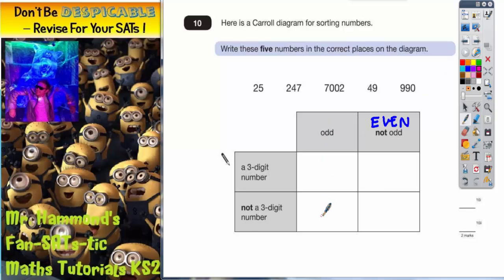So why don't we do odd first. So let's underline all the odd numbers. So 25 is odd, 247 is odd, 49 is odd. So those three numbers must go in this column.